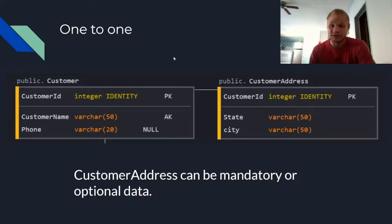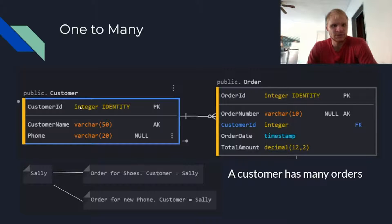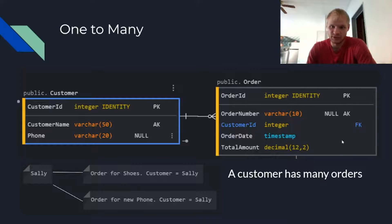One that we do see a lot though is one-to-many. So here we have the customer and the order table — a customer has many orders. The customer ID in the customer table is known as the primary key, and the customer ID in the order table is known as the foreign key, and usually it comes with a foreign key constraint. So there has to be a customer for an order to even be created.